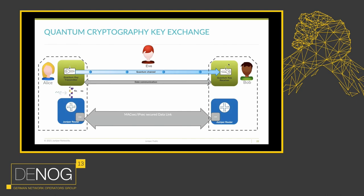Alice's router wants to get a key. As I mentioned, the ETSI REST API is defined for that. She sends a request to Alice's QKD device and the QKD device sends back a key and a key ID. Alice installs the key in whatever protocol she's using. She sends the key ID unencrypted to Bob, because with the key ID you cannot really do anything. Bob then uses that key ID to request the same key from Bob's QKD device and gets the key back. Bob's router can then use those keys in MACSEC, IPSEC, or any other protocol.